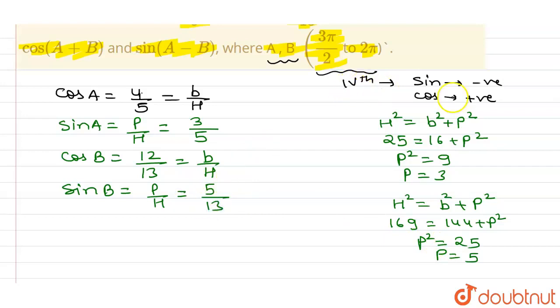And in the 4th quadrant, sin value is negative. So these both values are negative, and cos value remains positive.